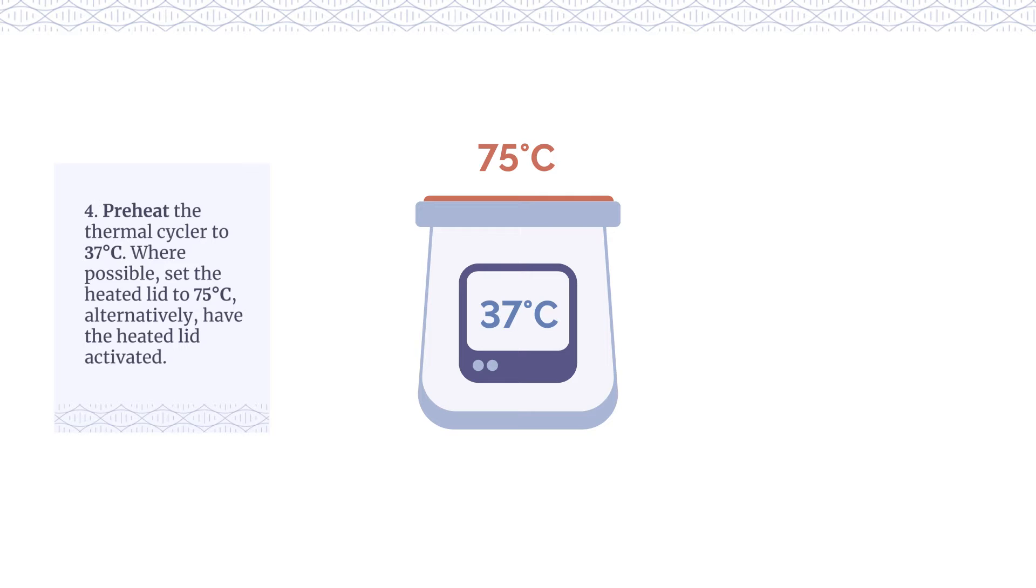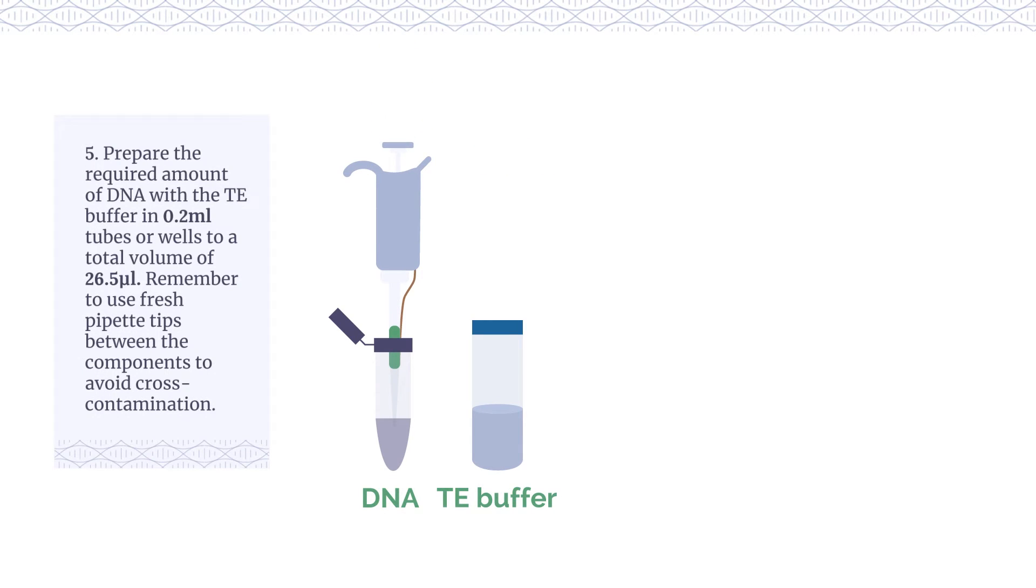Alternatively, have the heated lid activated. Prepare the required amount of DNA with TE buffer in 0.2 milliliter tubes or wells to a total volume of 26.5 microliters.